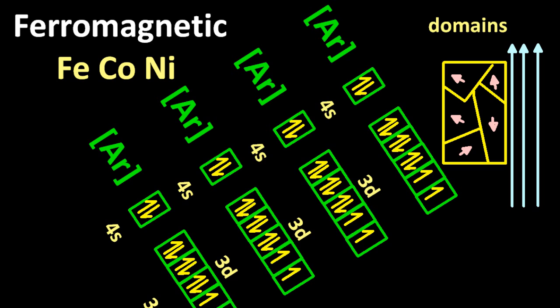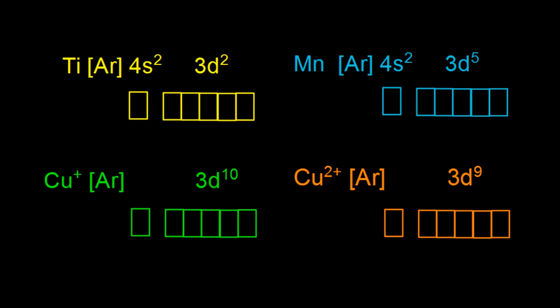Now this stuff is tricky, but I'm going to go through it several different ways. So let's look at the difference between paramagnetic and diamagnetic materials. I've got some transition metals there and some ions also.